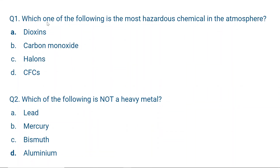Question number one: Which one of the following is the most hazardous chemical in the atmosphere? The correct answer is dioxins. Dioxins are also called persistent organic pollutants or POPs. These are carcinogenic, they do not biodegrade, and they remain persistent in the atmosphere — they are the most toxic. Then comes carbon monoxide, one atom of carbon and one atom of oxygen, which is also a toxic gas. Then comes halons, which are gaseous compounds of carbon with one atom from the halogen group — either bromine, chlorine or fluorine. And chlorofluorocarbons we all know.